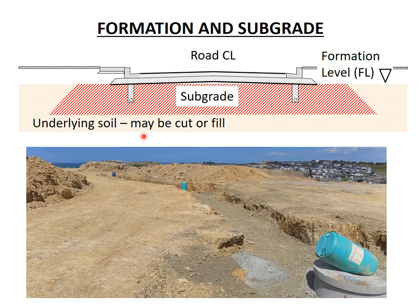The surface of the finished earthworks is called the formation. The formation level, or FL for short, is the height of the finished earthworks relative to a datum, and is usually shown on the drawings. A datum is a standard level used to measure heights — the most common datum is mean sea level. The formation level for each part of the road is determined during the design process and shown on the construction drawings to ensure the road is built to the correct levels.